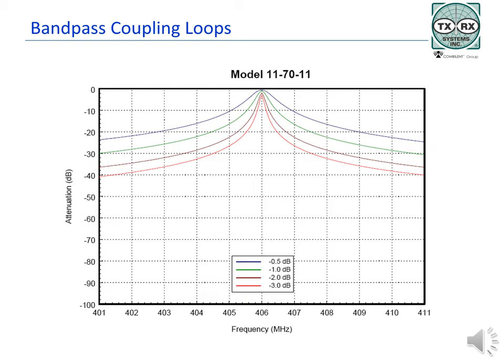As in all cavity filters, insertion loss is cumulative. So three cavities, each having 1.2 dB of insertion loss, would result in a total of 3.6 dB between the first input connector and the last output connector.